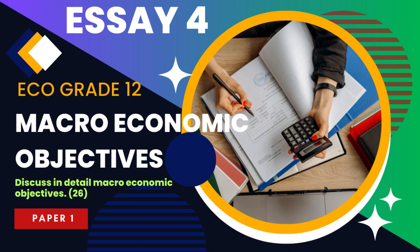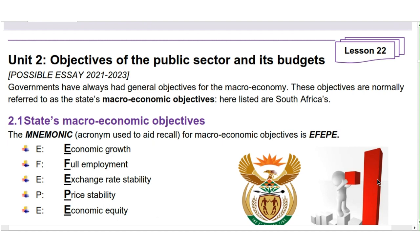Good day grade 12s. My name is Viola from the Distinction Bound Student and I'm delighted to present today's possible essay number 4. Cardin did the first three possible essays and today I'll cover macroeconomic objectives. The essay question is: Discuss in detail macroeconomic objectives, 26 marks. Governments have always had general objectives for the macroeconomy. These objectives are normally referred to as the state's macroeconomic objectives — here listed are South Africa's.